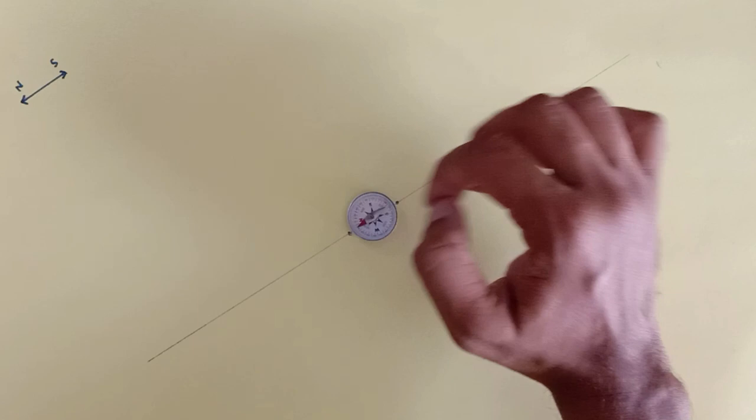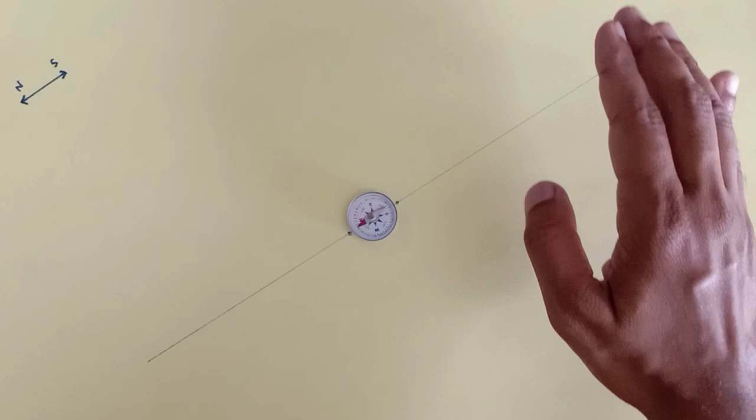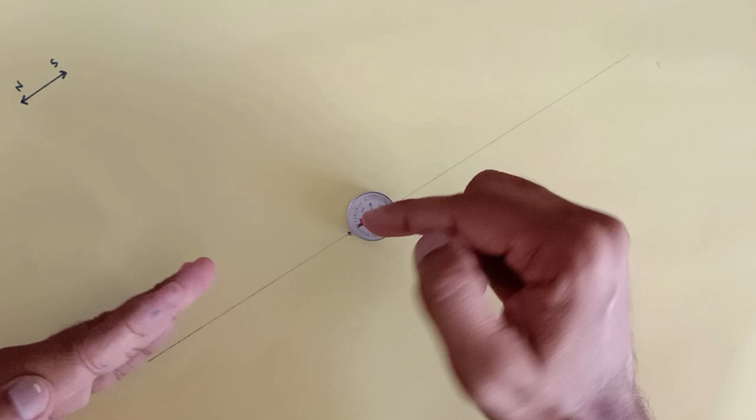To start the experiment, I have kept a compass like this. The compass needle itself is a magnet whose north is showing in this direction. That means if we consider the earth as a huge magnet, then the north of this magnet would be pointing towards the south of the other magnet.